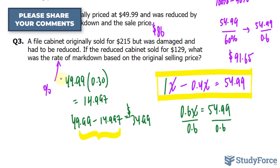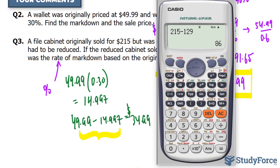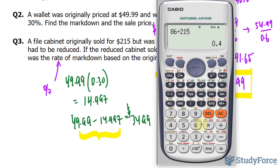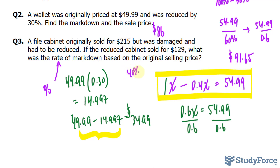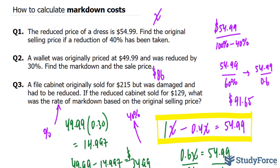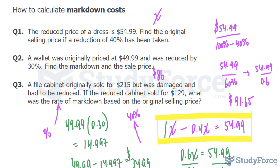They want us to find out how much $86 is from $215 as a percentage — as a rate. Often when they ask for a rate, they're asking for a percentage. So I'll take $86 and divide it by $215, and we get 0.4. Multiply that by 100% to get a percentage, and that's 40%. So the rate of the markdown was 40% of the original selling price. That is how to calculate the markdown costs.